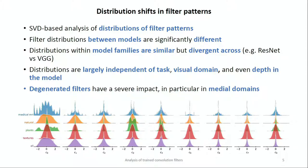We tried to study this distribution shift effect in filter patterns. We grouped the filters by different dimensions and compared the resulting distributions based on a singular value decomposition. The first thing we saw is that if you take two models and compare their filters, they are different. But if you look within model families — comparing two ResNets, for example — they are very similar, even if trained on different datasets or for different tasks. Their filters share some similarities.